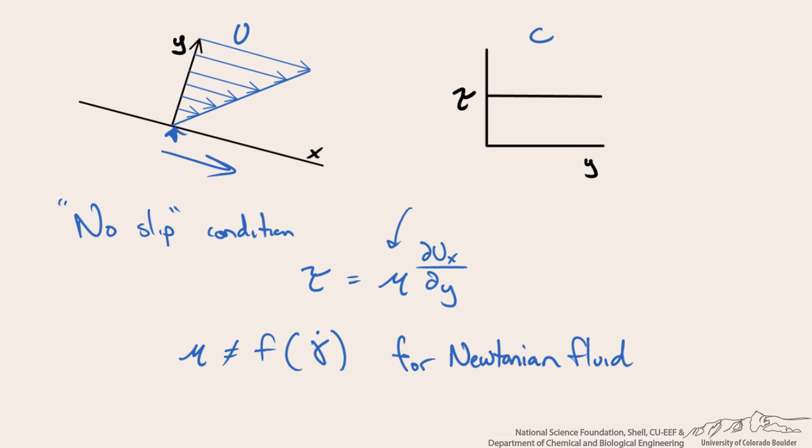So we know that this term here is constant, and when we look at our velocity profile, we see that the change in the velocity with respect to y is also constant. So we have two constants multiplied by each other, so we can say that the shear stress is constant from the surface of the plate as a function of y. So the answer is indeed c.